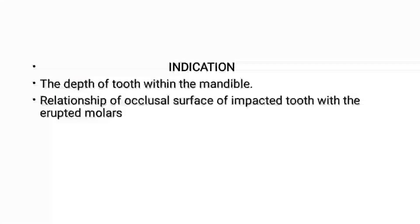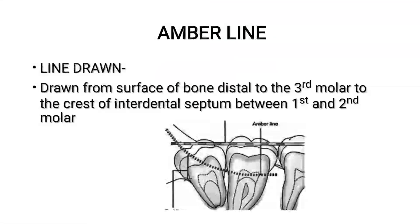What is amber line? The amber line is drawn from the bone surface distal to the third molar to the crest of the interdental septum between the first and second molar. You can see over this diagram — this is the amber line.